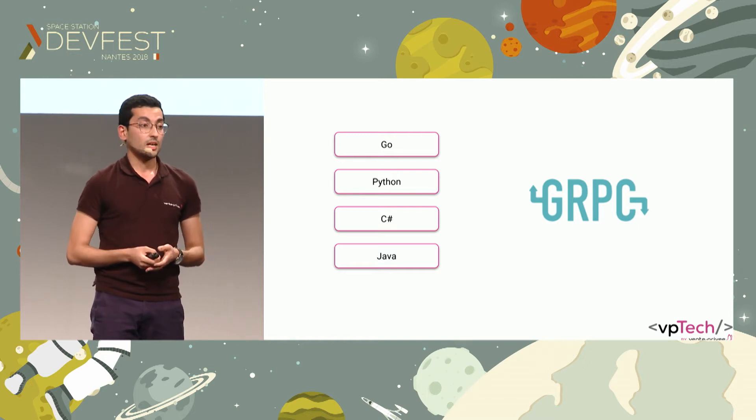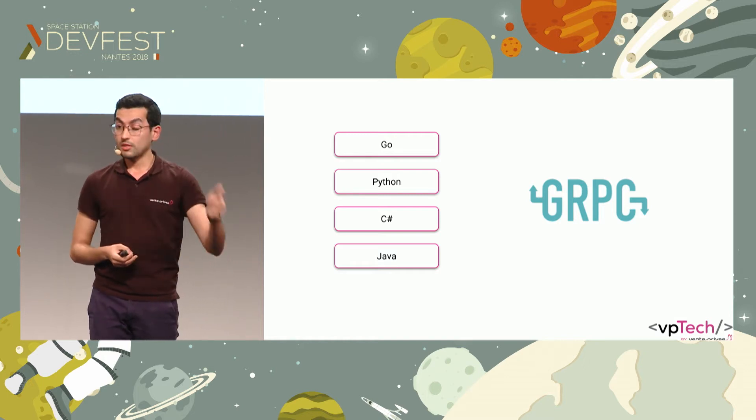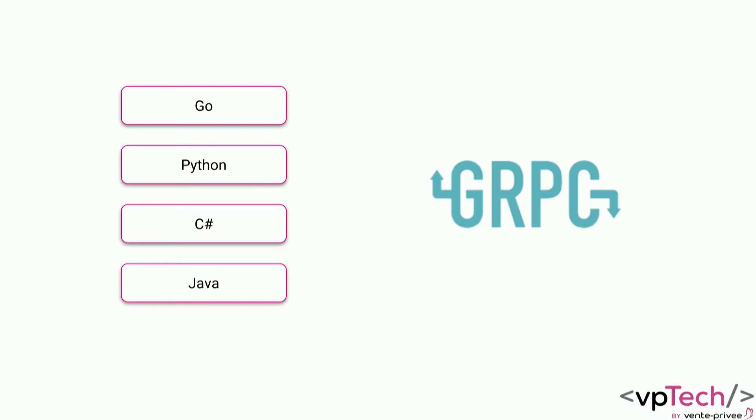gRPC supports all these languages we had. In fact, it supports around 10 languages. So if you are an Android developer using Flutter, you're covered because gRPC also supports Dart language.